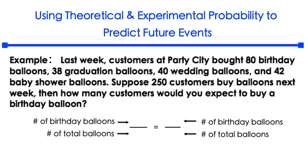The way we're going to approach solving this is by writing a proportion. When you write a proportion, you'll be writing two ratios or two fractions that are equal to each other. Whatever value you use for the numerator must represent the same thing — in this case, both numerators will represent the number of birthday balloons. The denominator of a fraction is going to represent the number of total balloons.